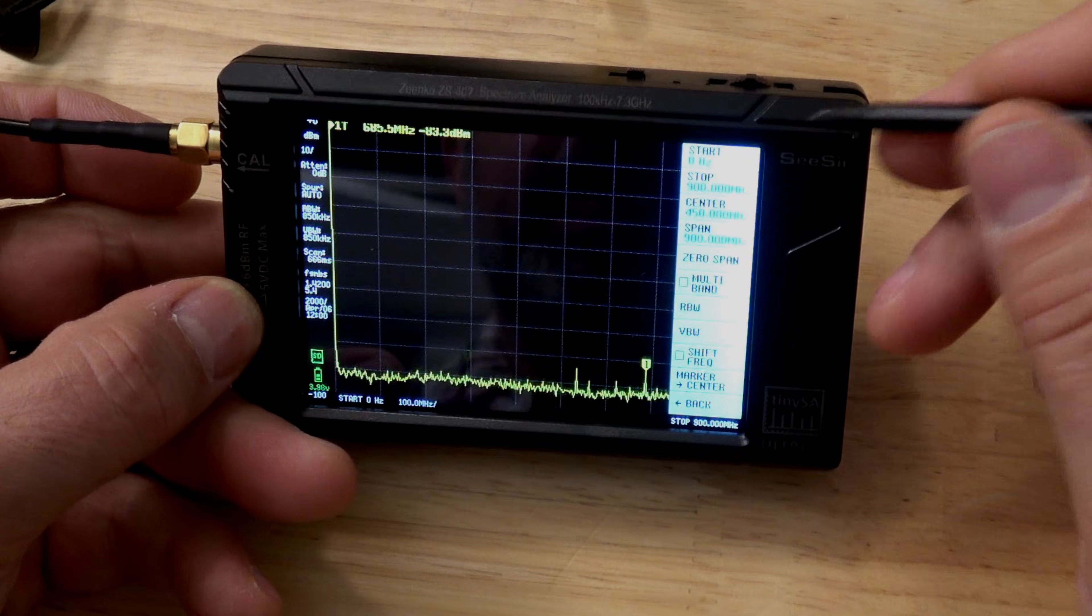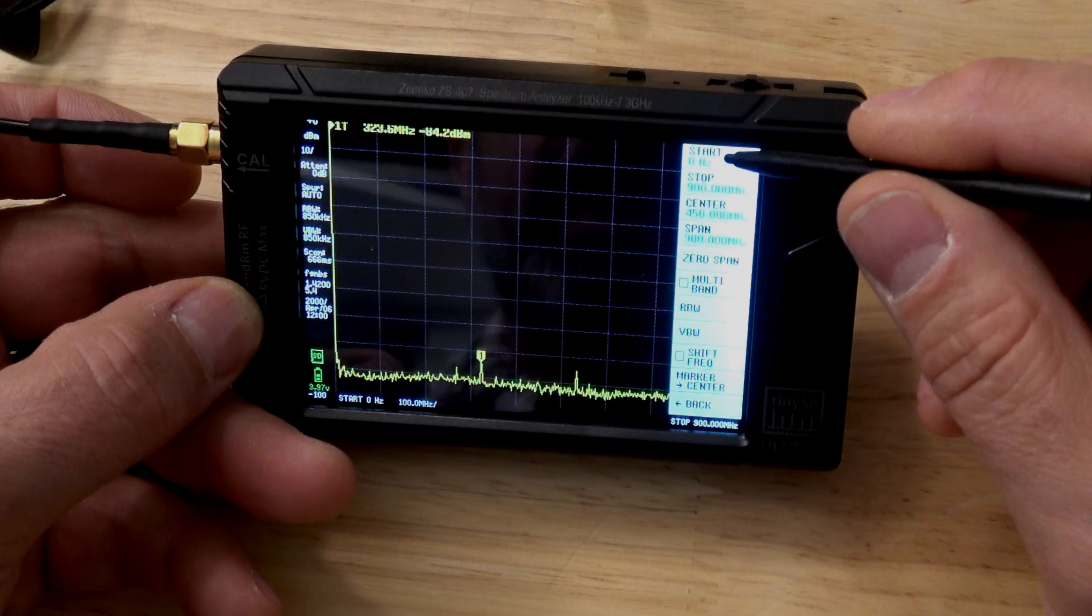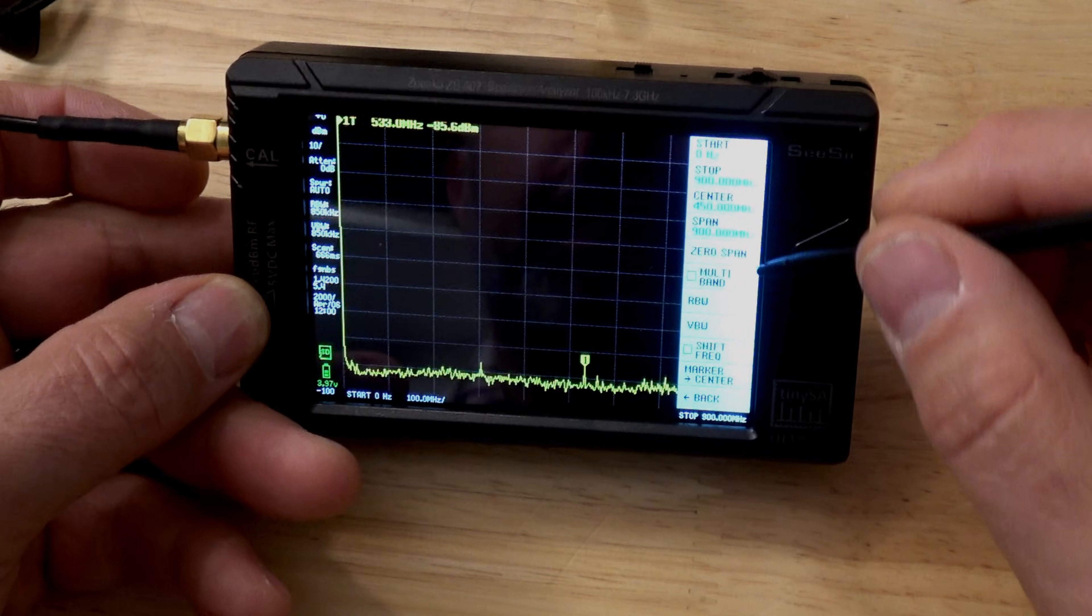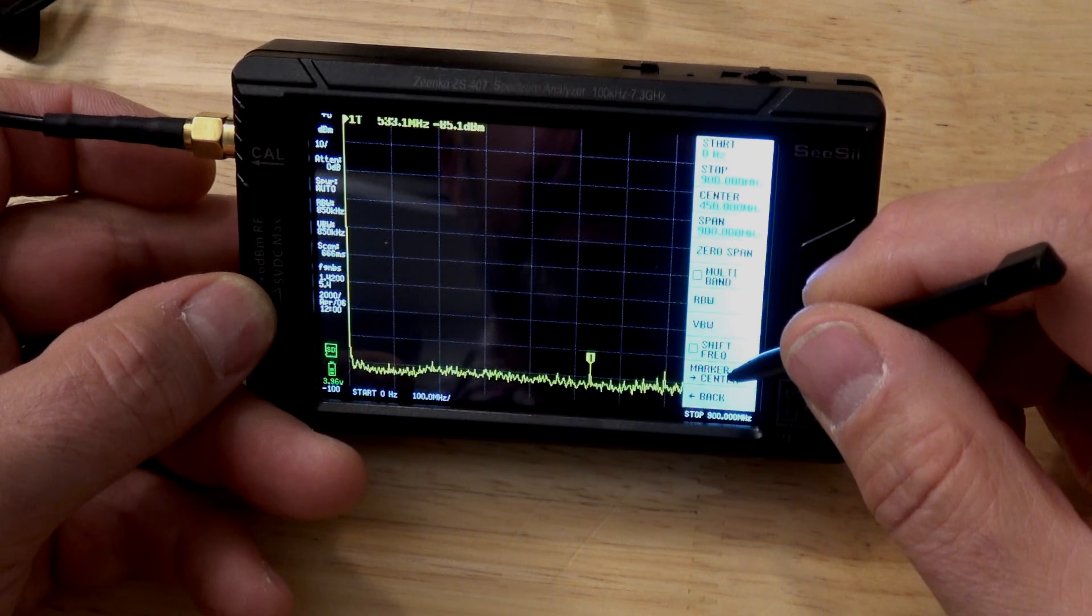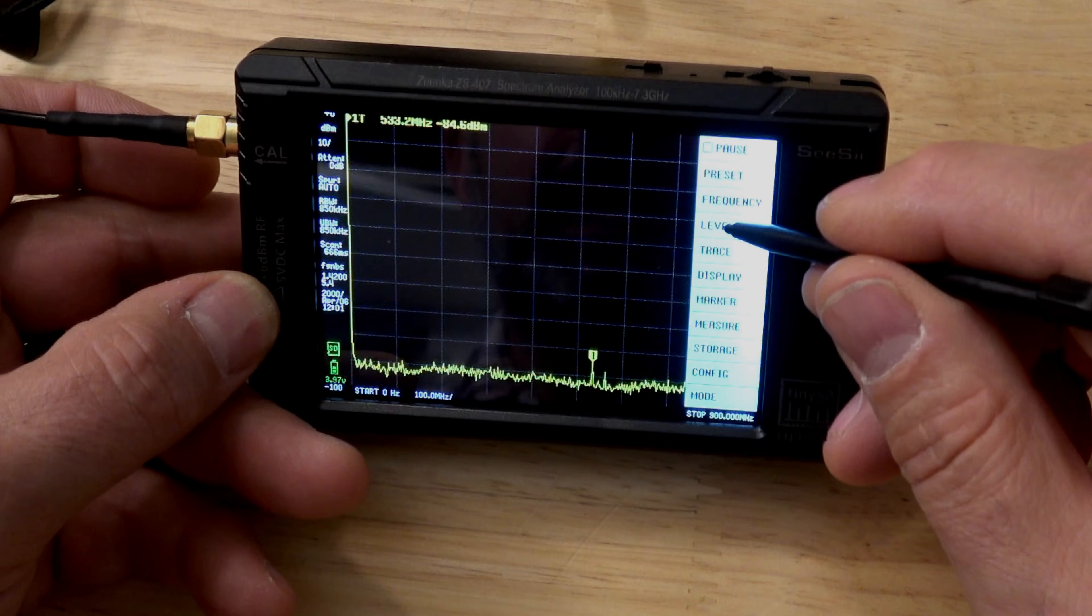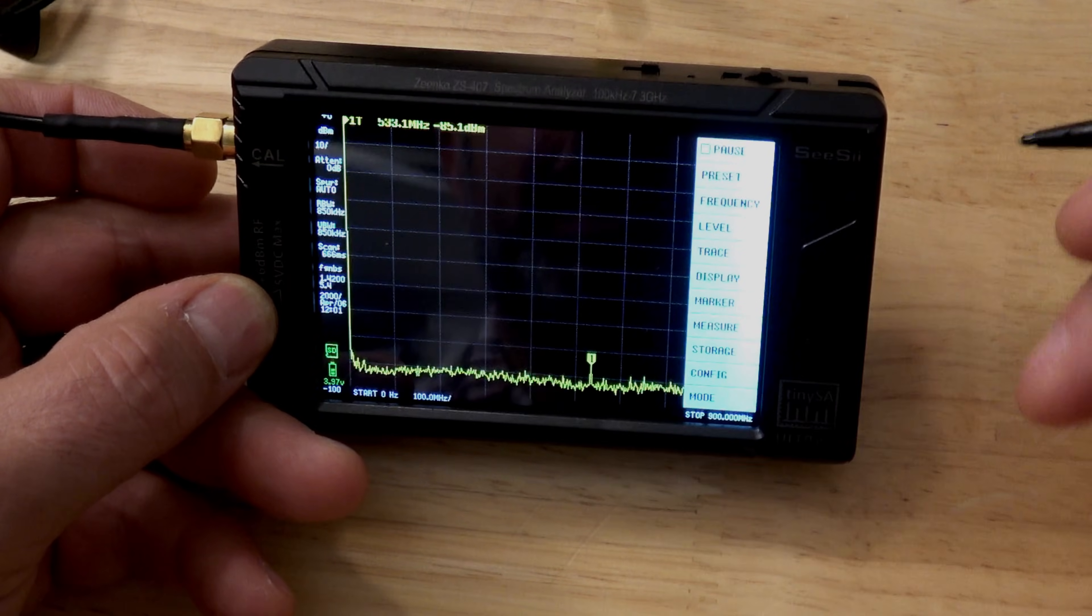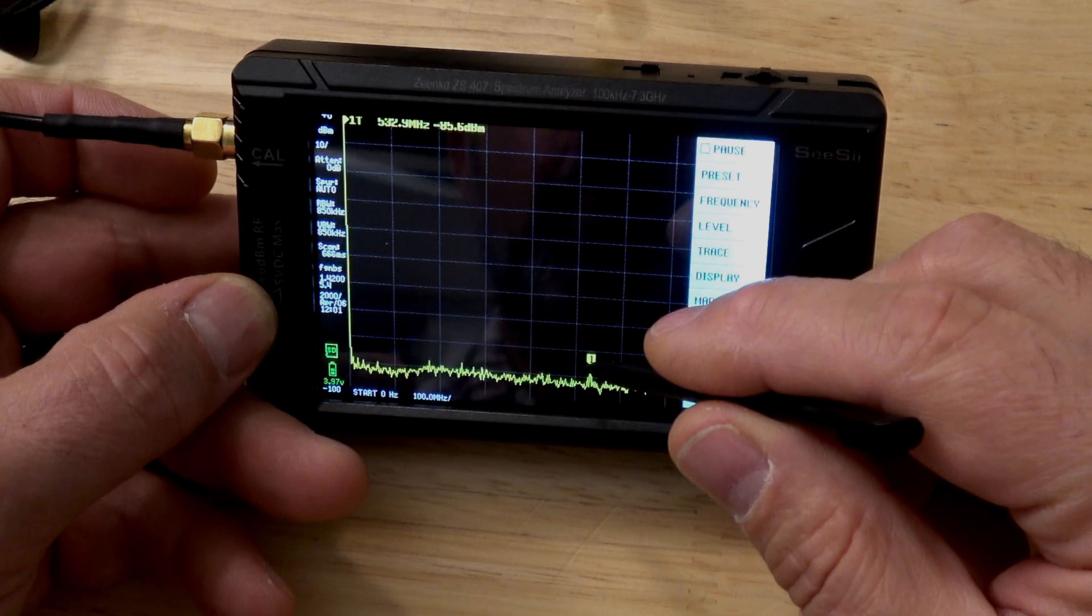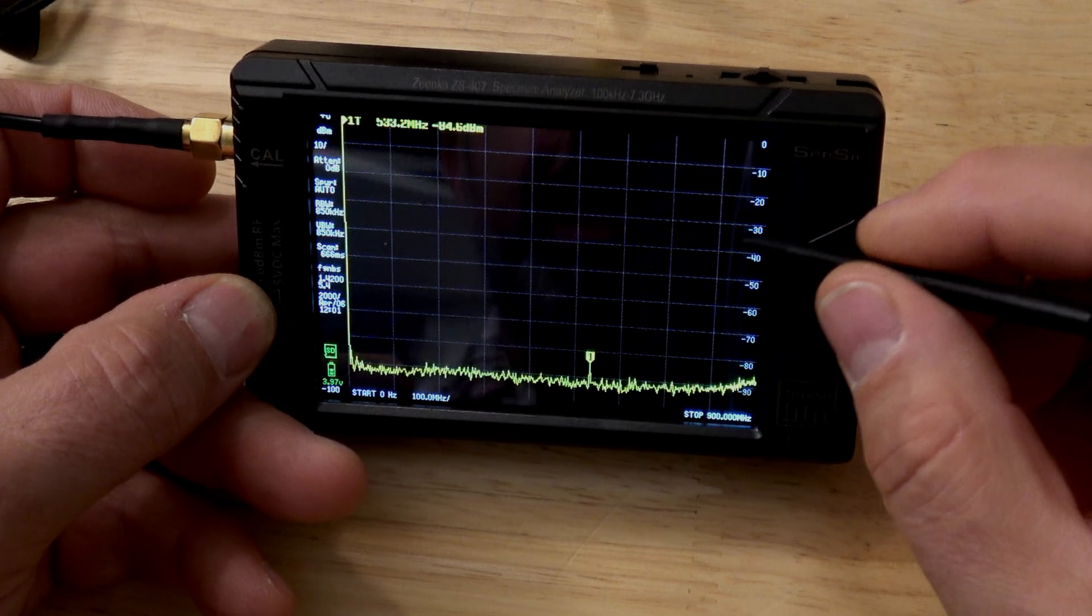So, here we go here. Frequency, right? Manually do our frequency. Now, I can do the whole span, which is where we're at right now. We're looking at everything. We can do multiband, and we can shift frequency. So, there's options in there. Levels, right? Attenuation, scales, that kind of stuff. So, how high or low do you want that signal level to be? Right here, whatever one is, is pretty low on the spectrum.